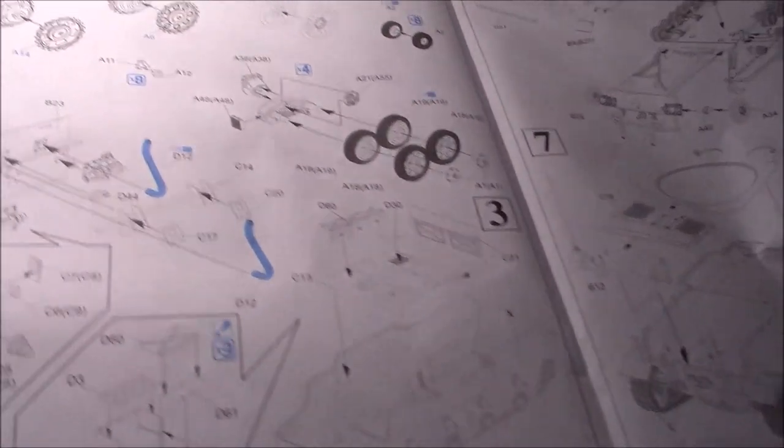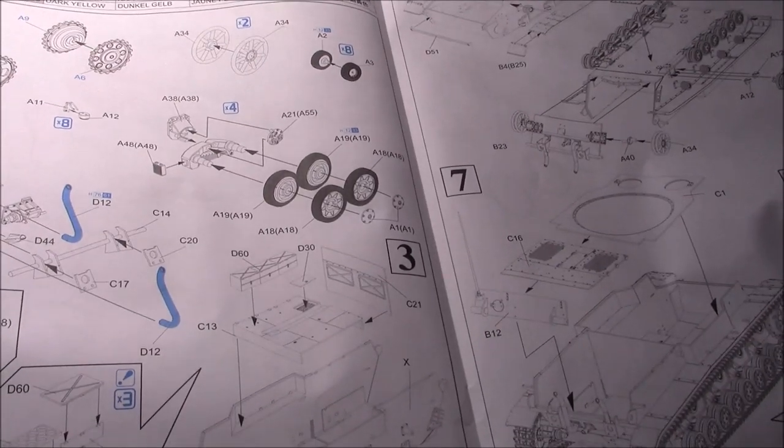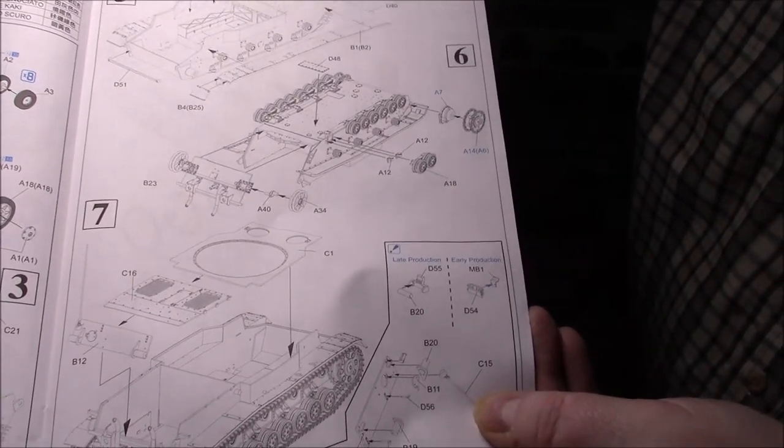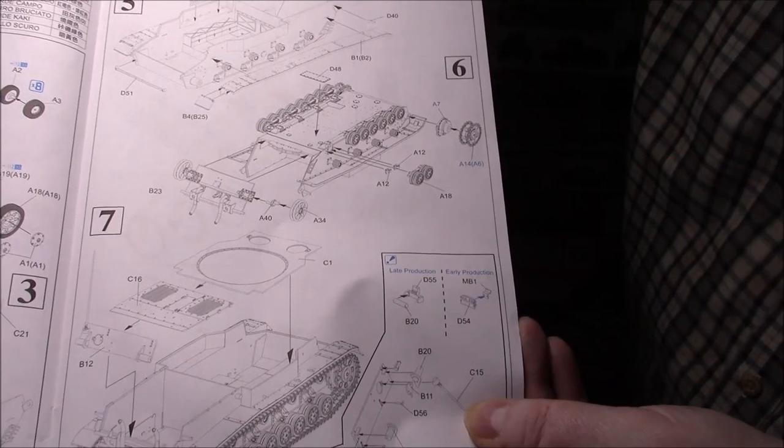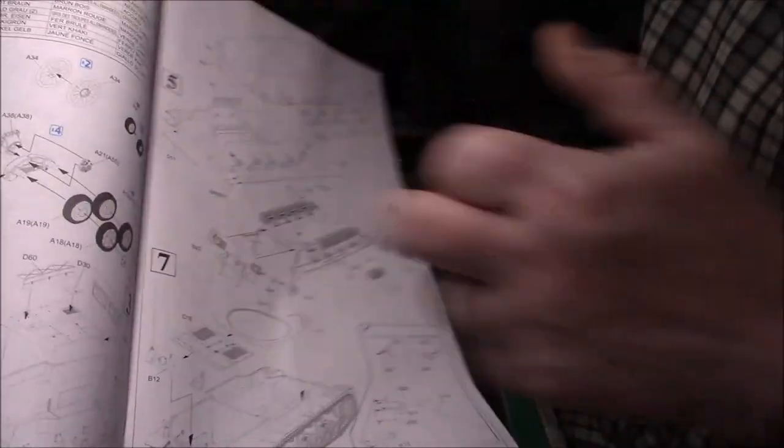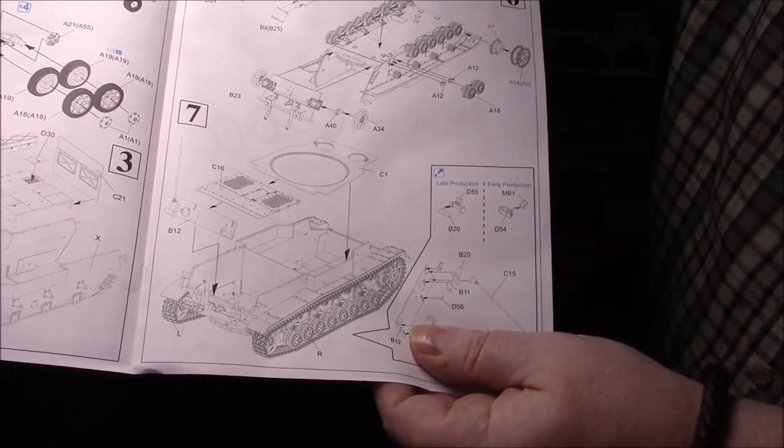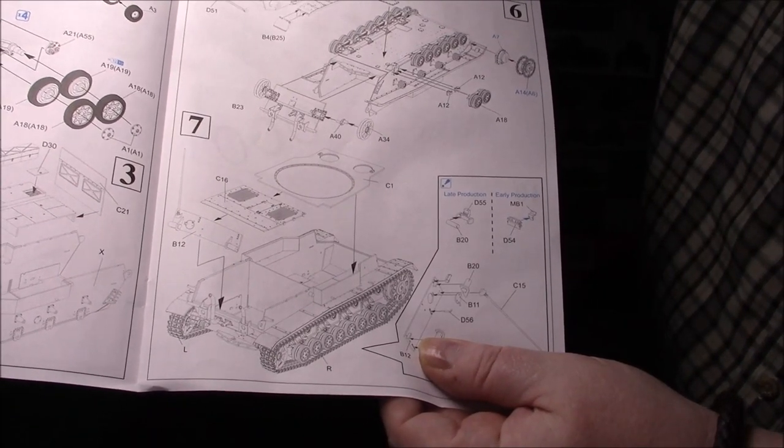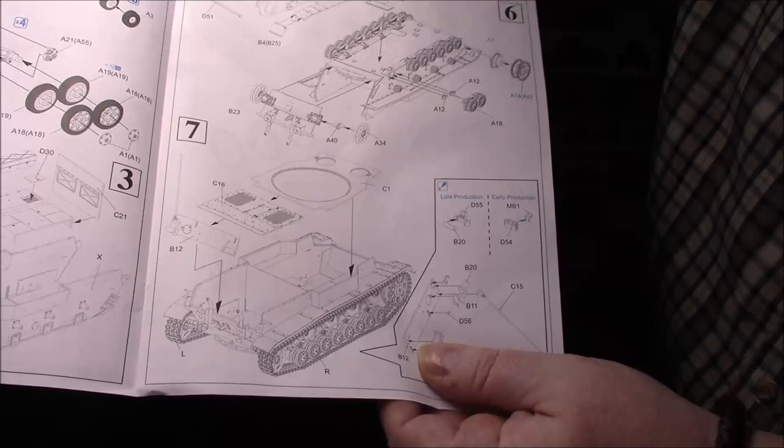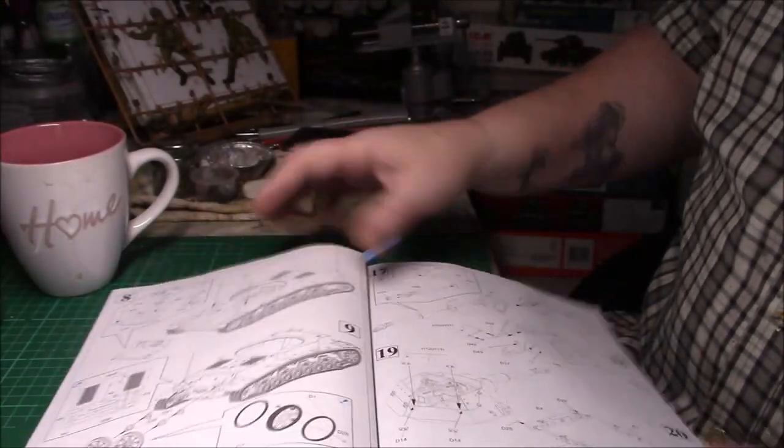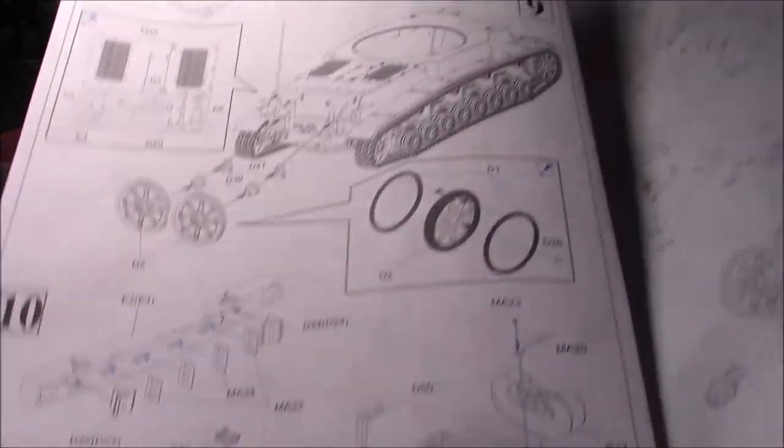Just the usual, start off making the bogies, wheels, sprockets and return rollers. Starting on the lower hull, building parts of the lower hull. Return rollers on again and some of the inside. Then we're on the reverse putting some bits on the bottom. Then we have the front panel which we've built on part two which goes on to the rear. Parts of the aerial which I probably won't put on until near the end because I'll snap it off.